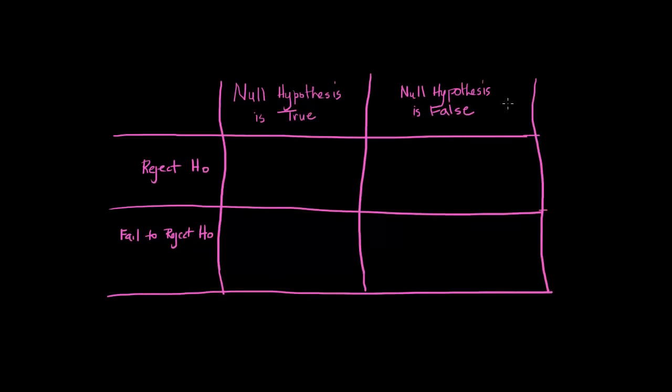So here are our four possibilities. The null hypothesis is actually true and we can either reject it or fail to reject it. The null hypothesis is actually false and we can reject or fail to reject.